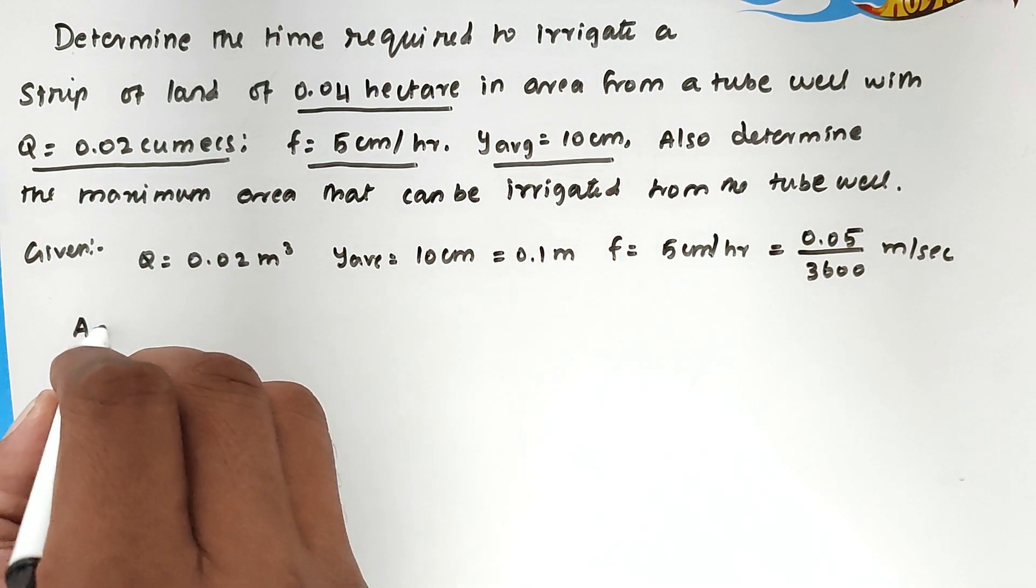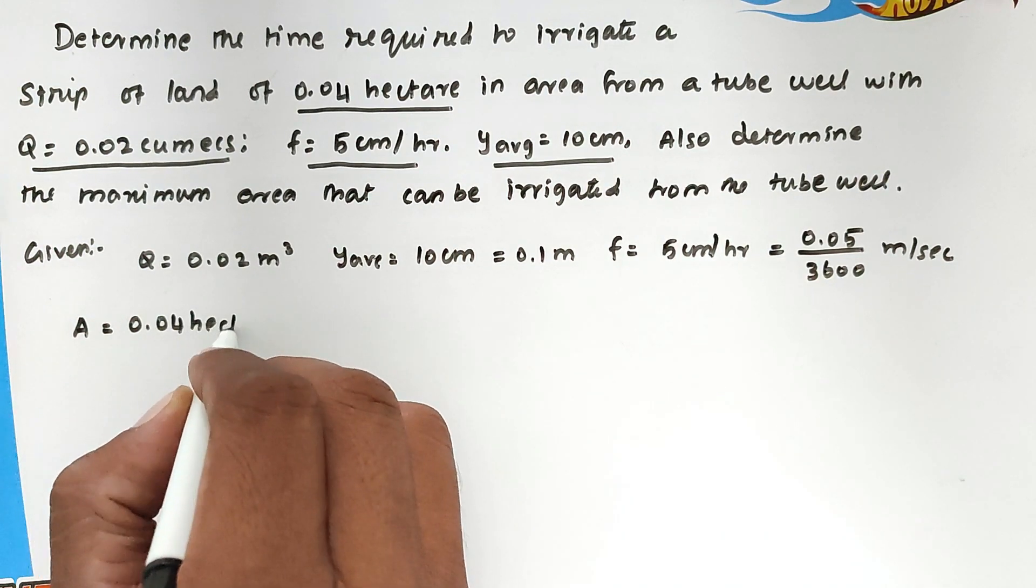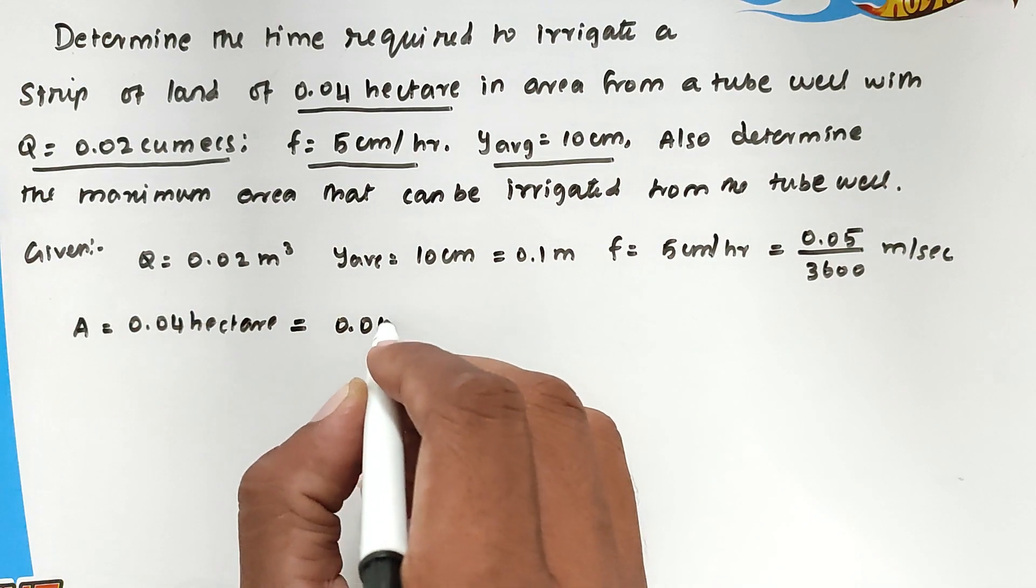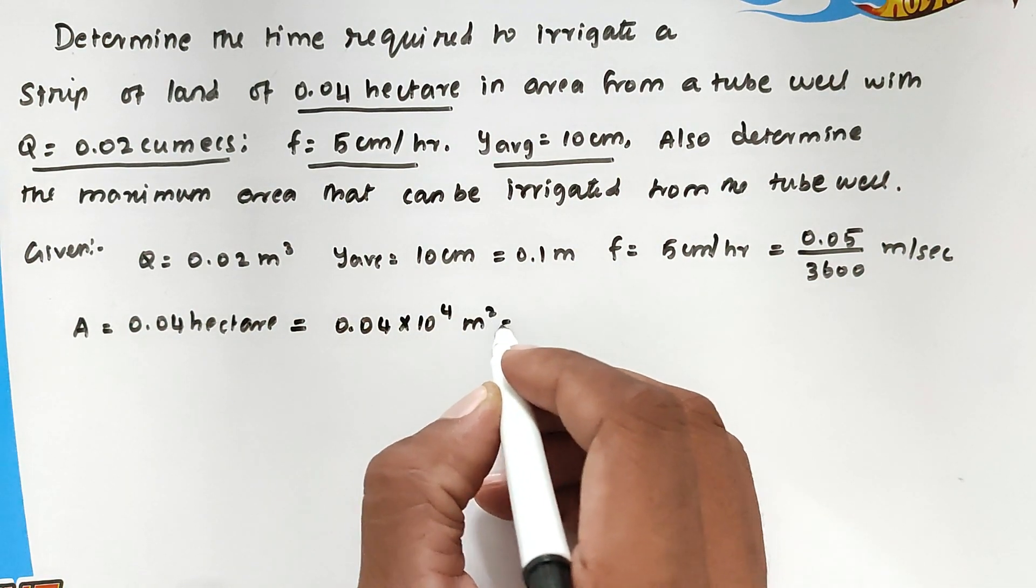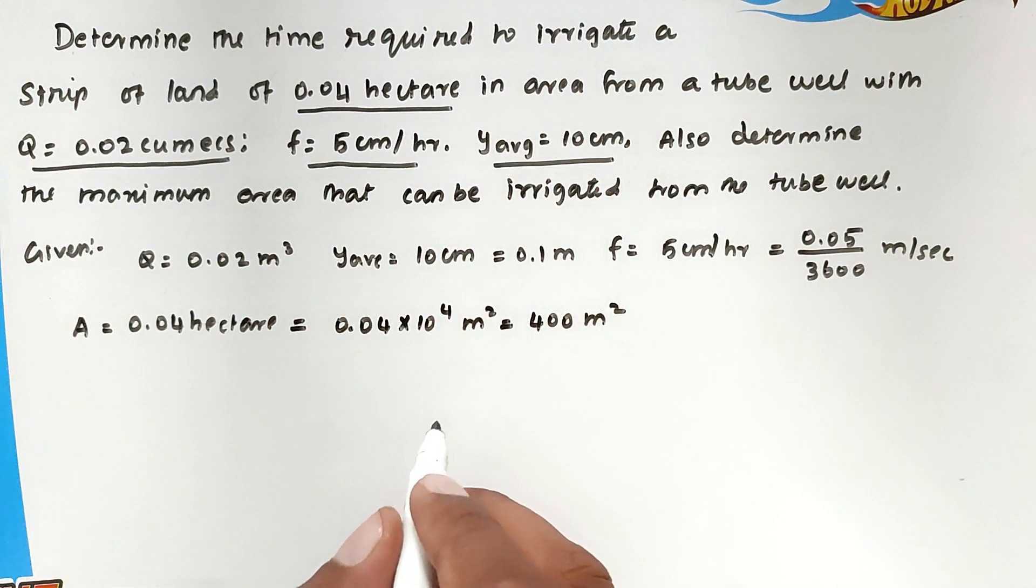Next thing is area. The area is 0.04 hectares. We can convert into meter square: 0.04 into 10 power 4 meter square, which is 400 meter square.